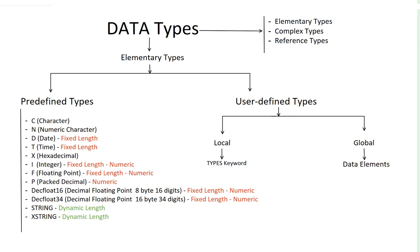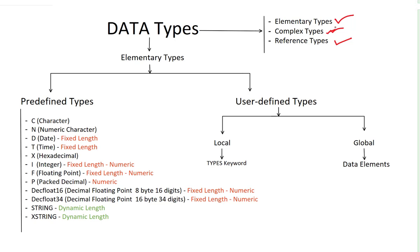Data types can be of three types: elementary types, complex types, and reference types. Elementary types are your single fields. If you group these single fields into a structure or an array we call them complex types, and if you are dealing with object-oriented programming we create something called reference objects. So if you want to define a reference object then we refer that to a reference type. For now we will talk about elementary types.